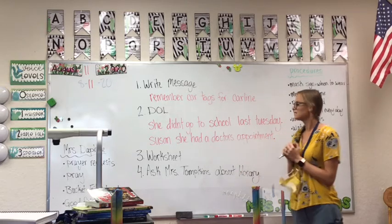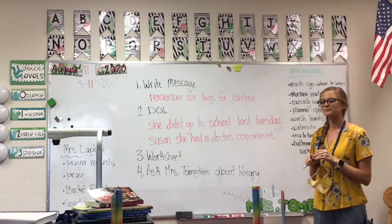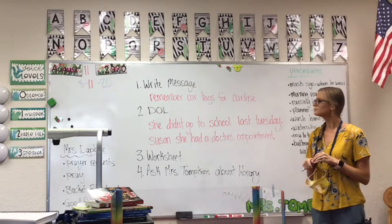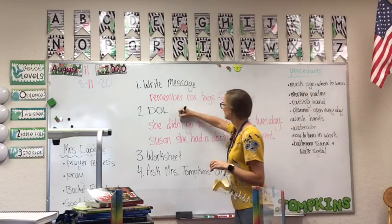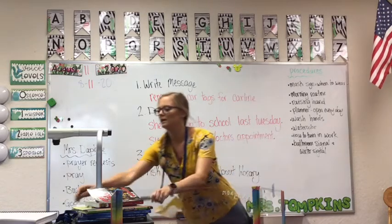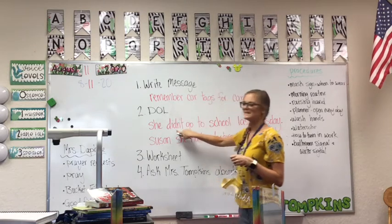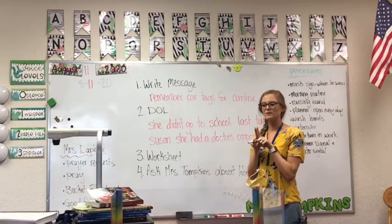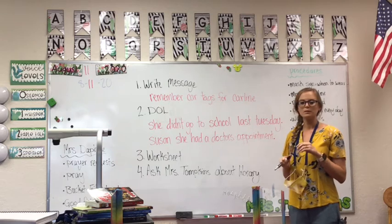What did you guys see in the first sentence? She didn't go to school last Tuesday. What are some corrections you need to make here? Connor — you need to put an apostrophe in didn't. We need to put an apostrophe between the N and T in didn't, because this is a contraction. Remember, it's two words: did and not. We put them together to make it didn't, so we need to put the apostrophe there. If you didn't do that, go ahead and fix it on your paper.